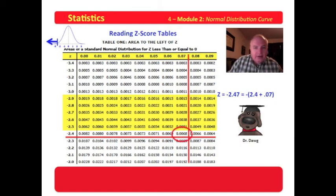We now have our value, 0.0068. And what 0.0068 actually is, is 0.68%. Actually, under 1% of the data lie to the left of the z-score of negative 2.47.